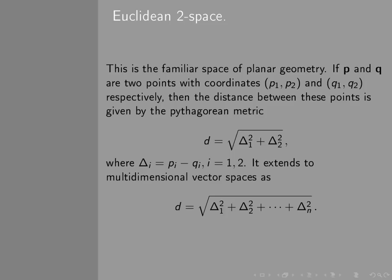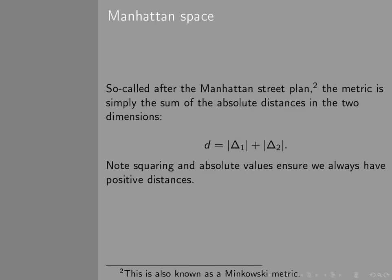But what happened in the 19th century is that people realised there were other forms of geometry, other forms of geometry than the Euclidean space. So let's take another example, what's often called the Manhattan space, sometimes called the Minkowski space. It's named after the Manhattan street plan, where the streets all got right angles to one another. And basically it measures how far you would have to walk following these streets to get between two points in the city.